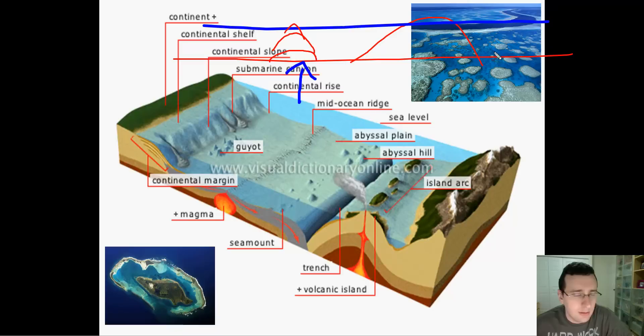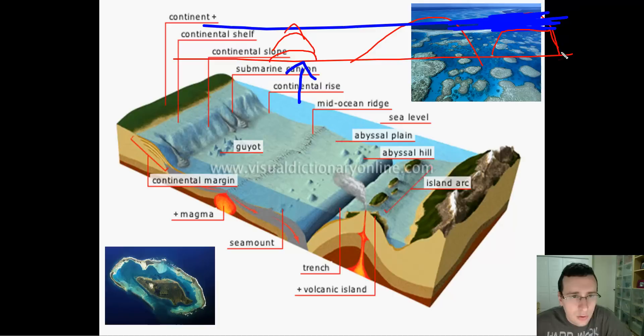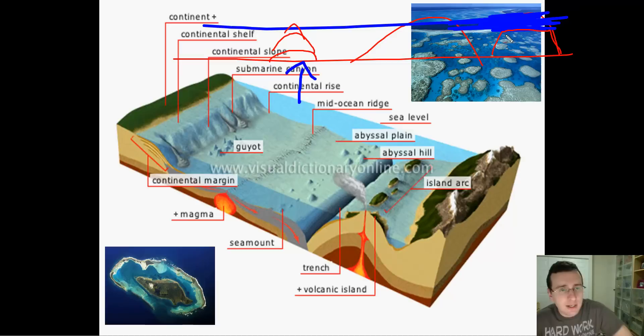You may also get guyots. Guyots are basically seamounts or islands that were once stretched over the surface, but the waves eroded the top of the mountain away — just like they do with continents. What you end up with is a hill with a flat top because the waves erased it through erosion. So you would normally see a seamount forming at the hot spot, an island forming after that, and then a guyot after that — because that guyot was once a seamount that became an island and then became eroded.